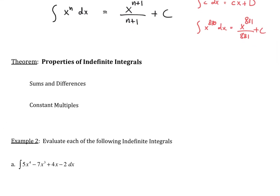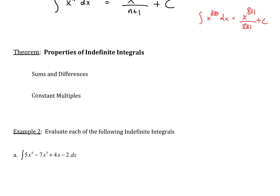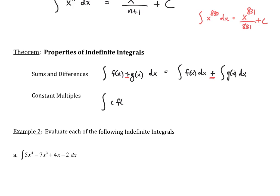Two properties of indefinite integrals: first, the antiderivative of a sum f of x plus g of x dx can be split into the antiderivative of f of x dx plus the antiderivative of g of x dx — this also holds for differences. Second, the constant multiple rule: the antiderivative of a constant times a function allows you to factor the constant out of the integral. We'll work on more examples in class together.